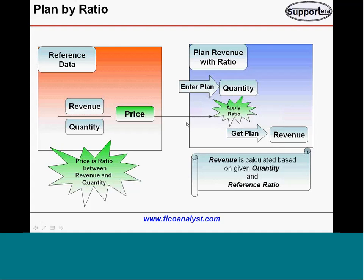In practice, it is always good to enter the plan quantities and come up with a ratio for prices — then you will get the revenue plan automatically. That is the functionality you should use. Otherwise, if you plan revenue manually, you are not using SAP functionality and it becomes a manual plan.